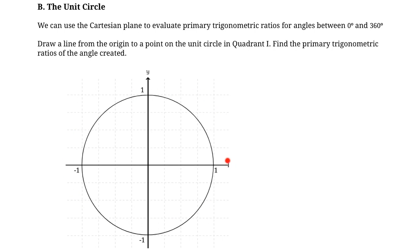Here we have our unit circle. It's centered at the origin, and it's a unit circle because the radius is one unit of measure. We can identify these four points: this point is (1, 0), the point at the top is (0, 1), the point at the left is (-1, 0), and the point at the bottom is (0, -1). Those are four known coordinates.